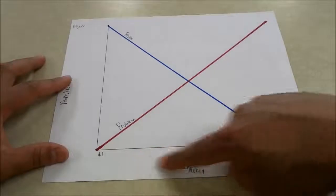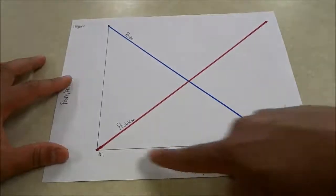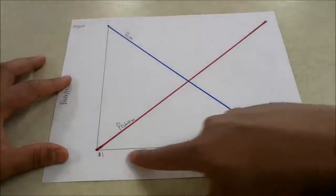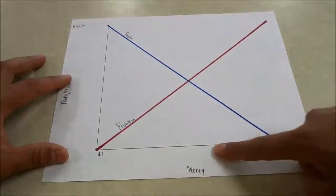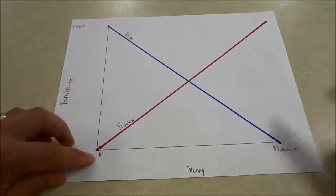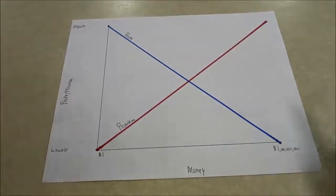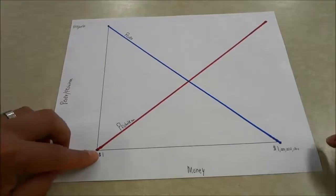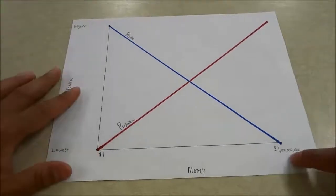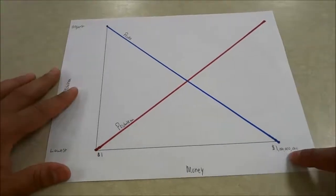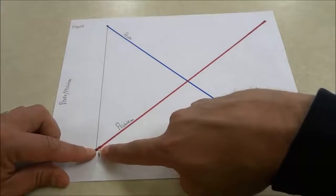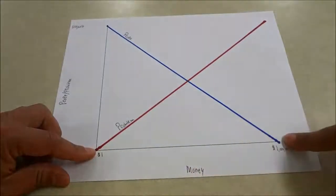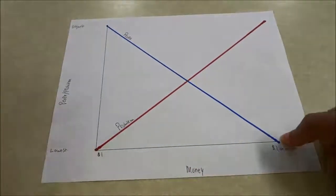Right here at the bottom we have the money line. This represents the amount of money that you are earning. I just put some rough numbers here for the sake of argument — one dollar and one billion dollars. So this end of the line is the lowest and this end is the highest.